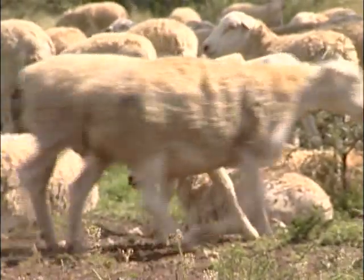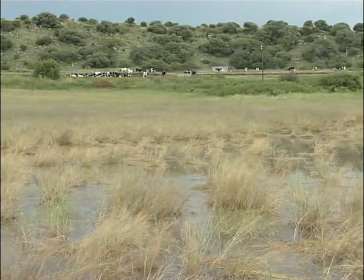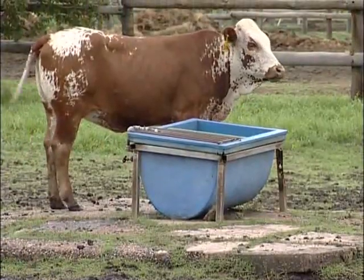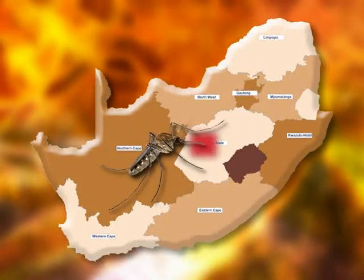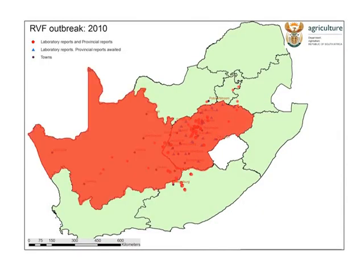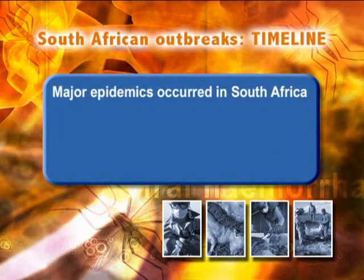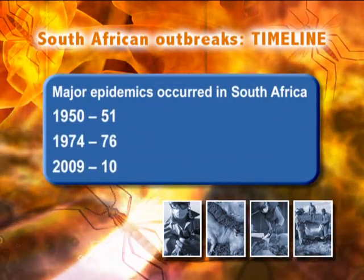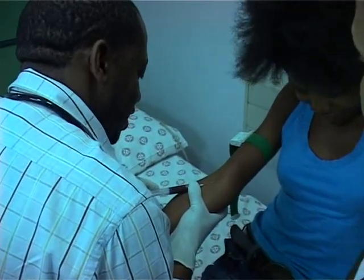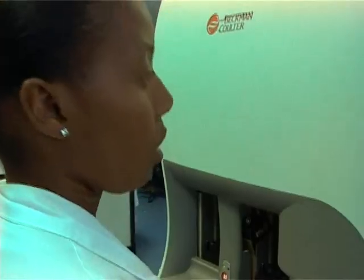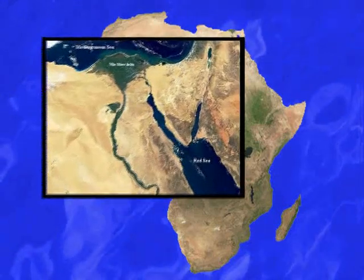Recurring outbreaks of Rift Valley Fever took place in South Africa between 2008 and 2010. It re-emerged in 2008 following good rains in Mpumalanga province, with subsequent spread to three more provinces. In 2009, limited outbreaks occurred in two provinces, followed by a widespread outbreak in 2010. The 2010 outbreaks occurred in five provinces of South Africa and in neighboring Namibia and Botswana, characterized by significant livestock losses, more than 220 laboratory-confirmed cases in humans with 26 deaths, and deaths in a small number of wild antelope species.